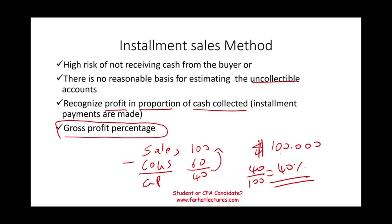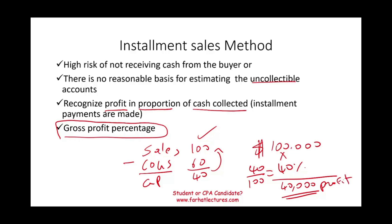Going back to the $100,000 example — if the gross profit percentage is 40%, I would recognize 40% of that cash collection as profit for that particular period. So with the installment sales method, you wait for the cash. Once you receive the cash, part of that cash is recognized as profit. The best way to illustrate this is to look at an example.